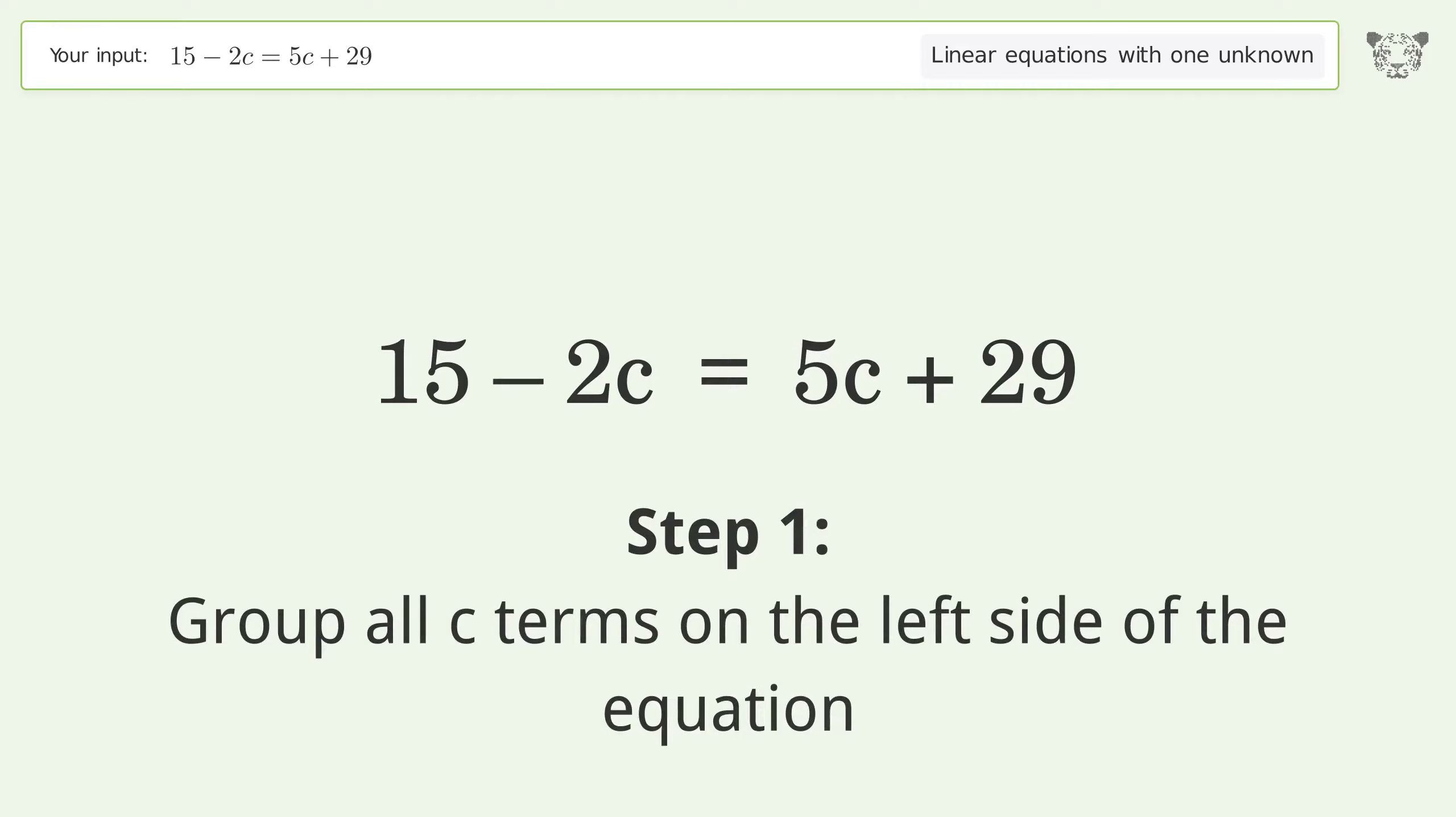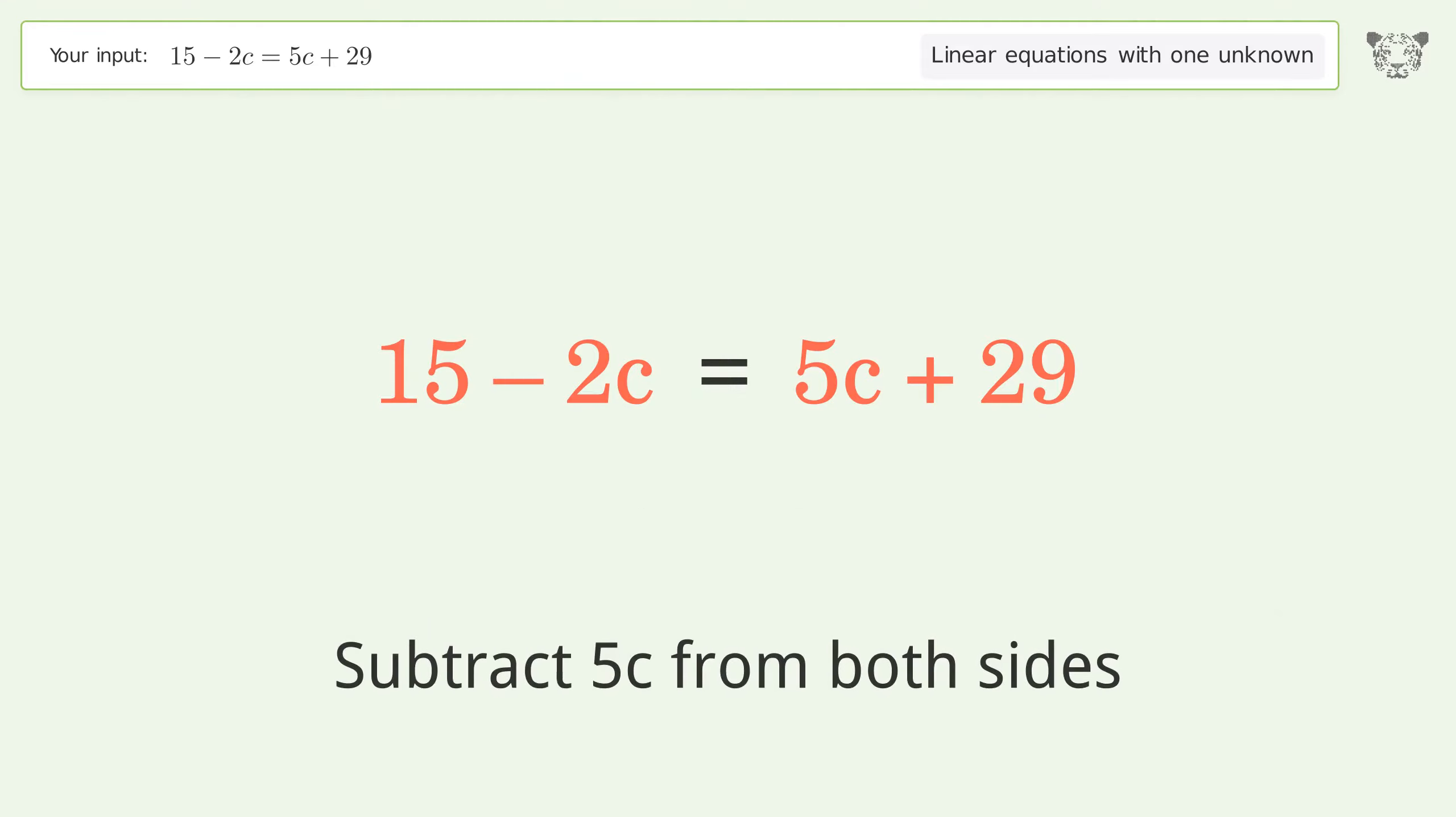Group all c terms on the left side of the equation. Subtract 5c from both sides.